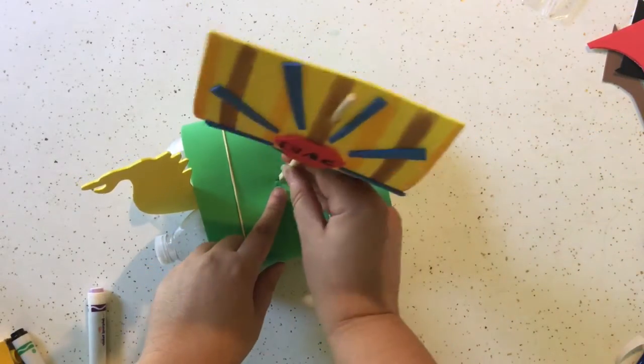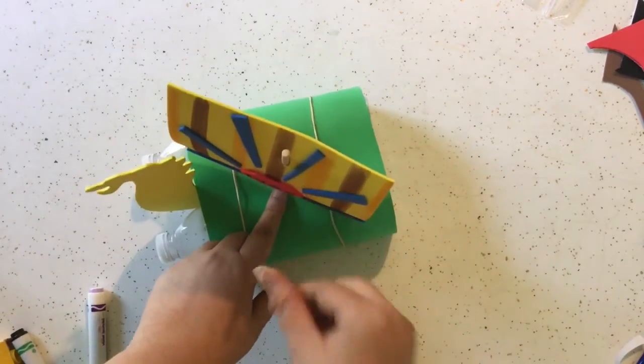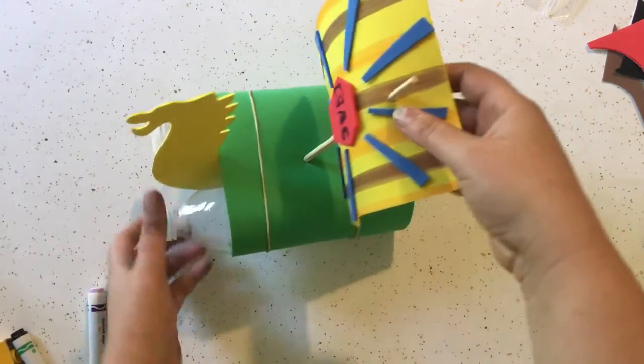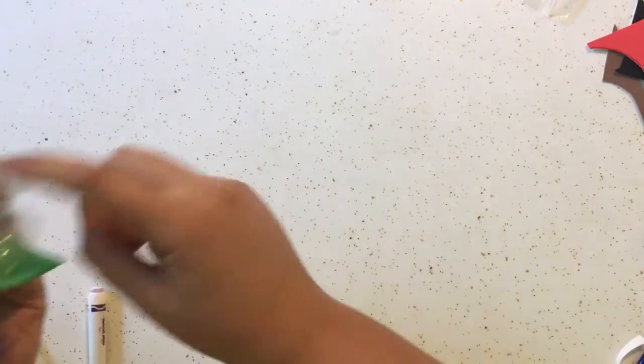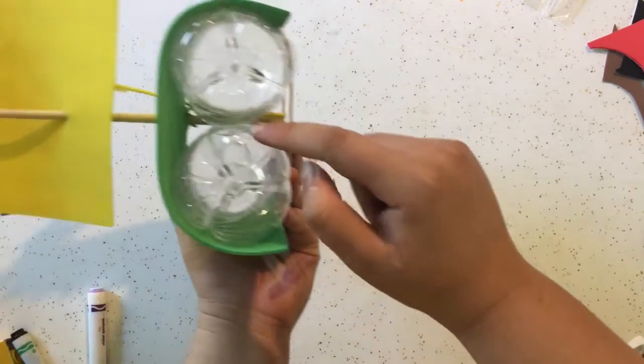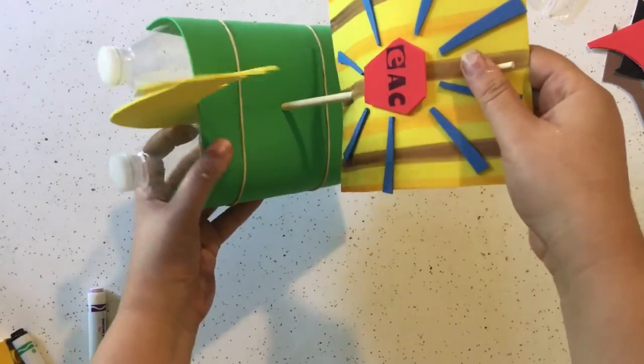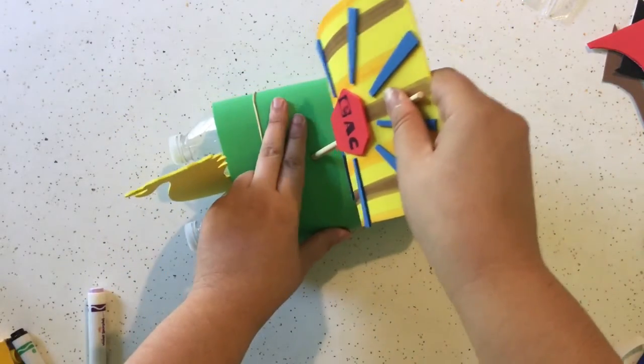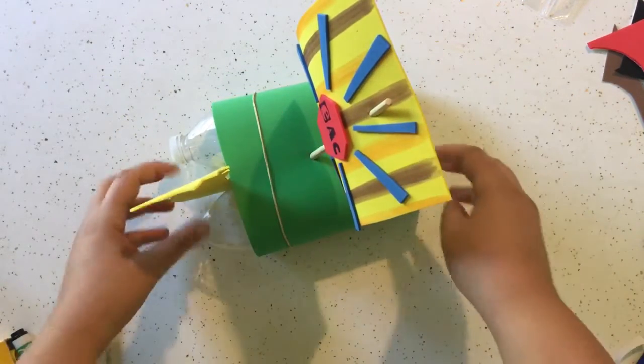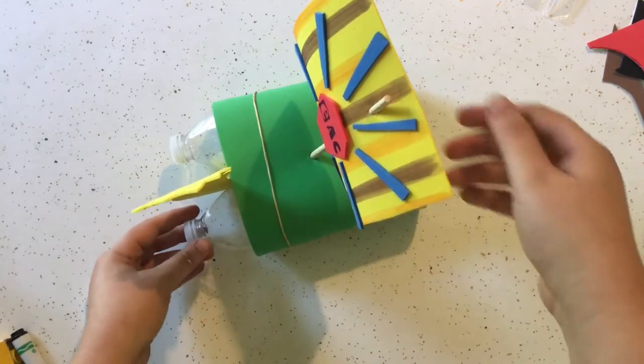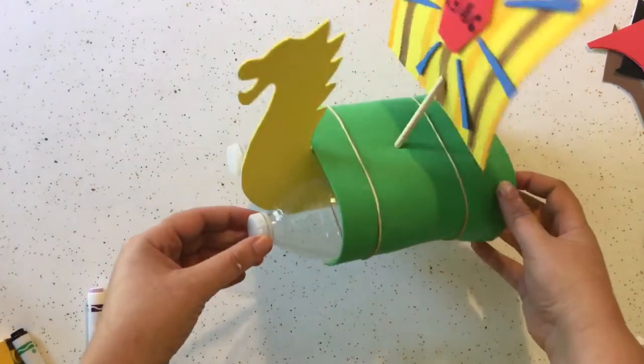And then all we have to do is stick that mast down through there and it's going to go down between the layers, between the bottles. You can see it going down in between there. And now our boat is ready to sail.